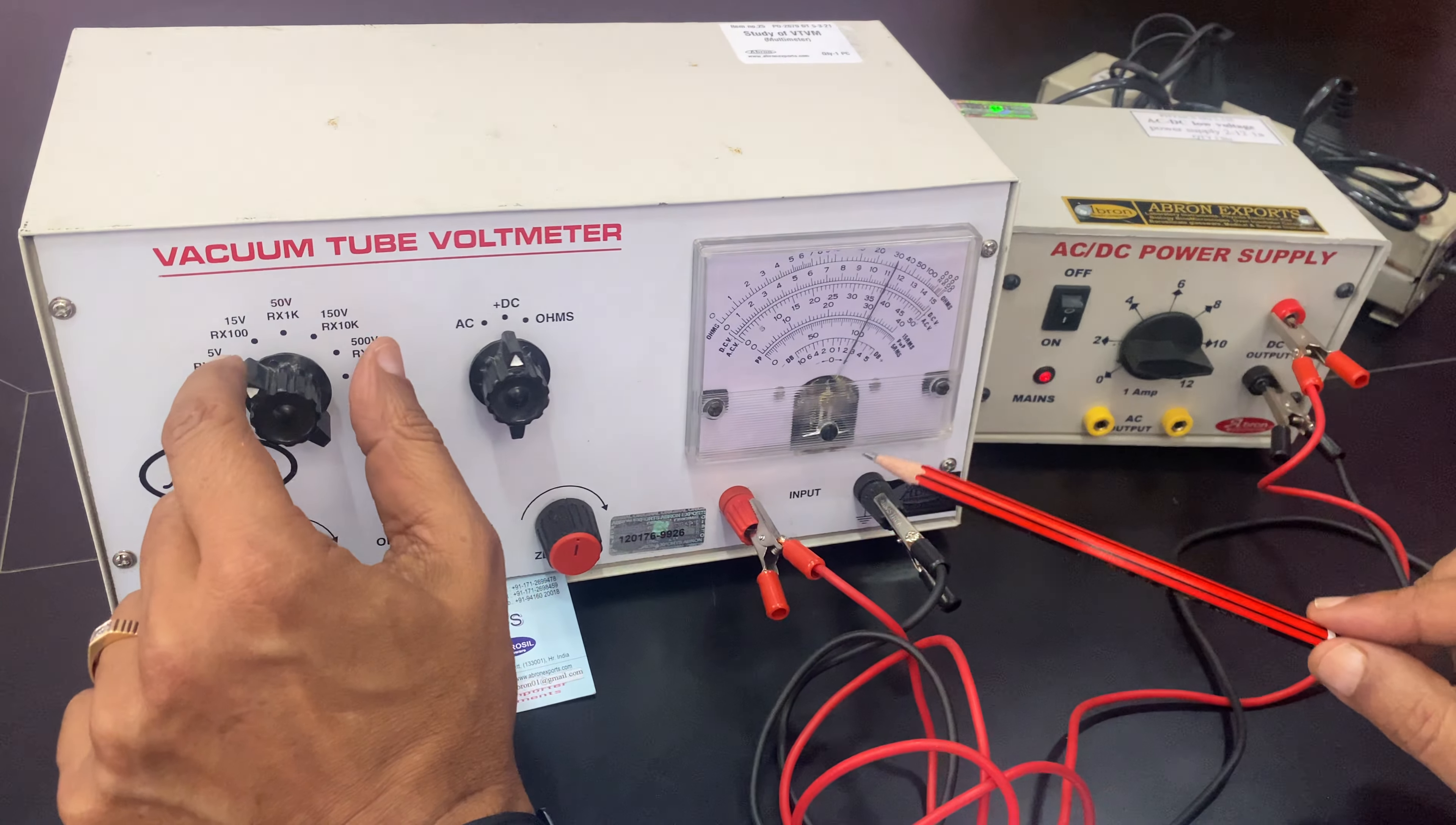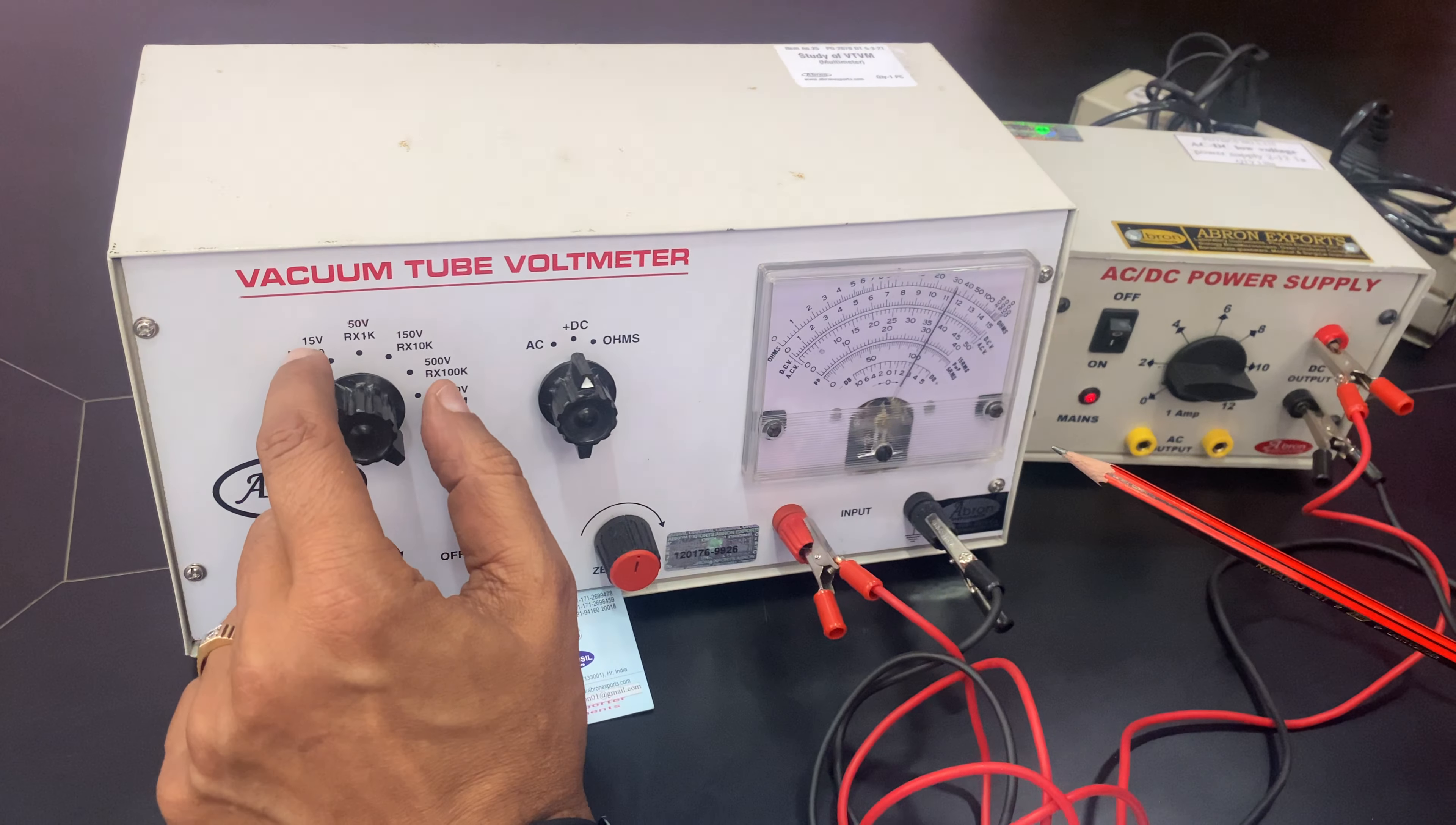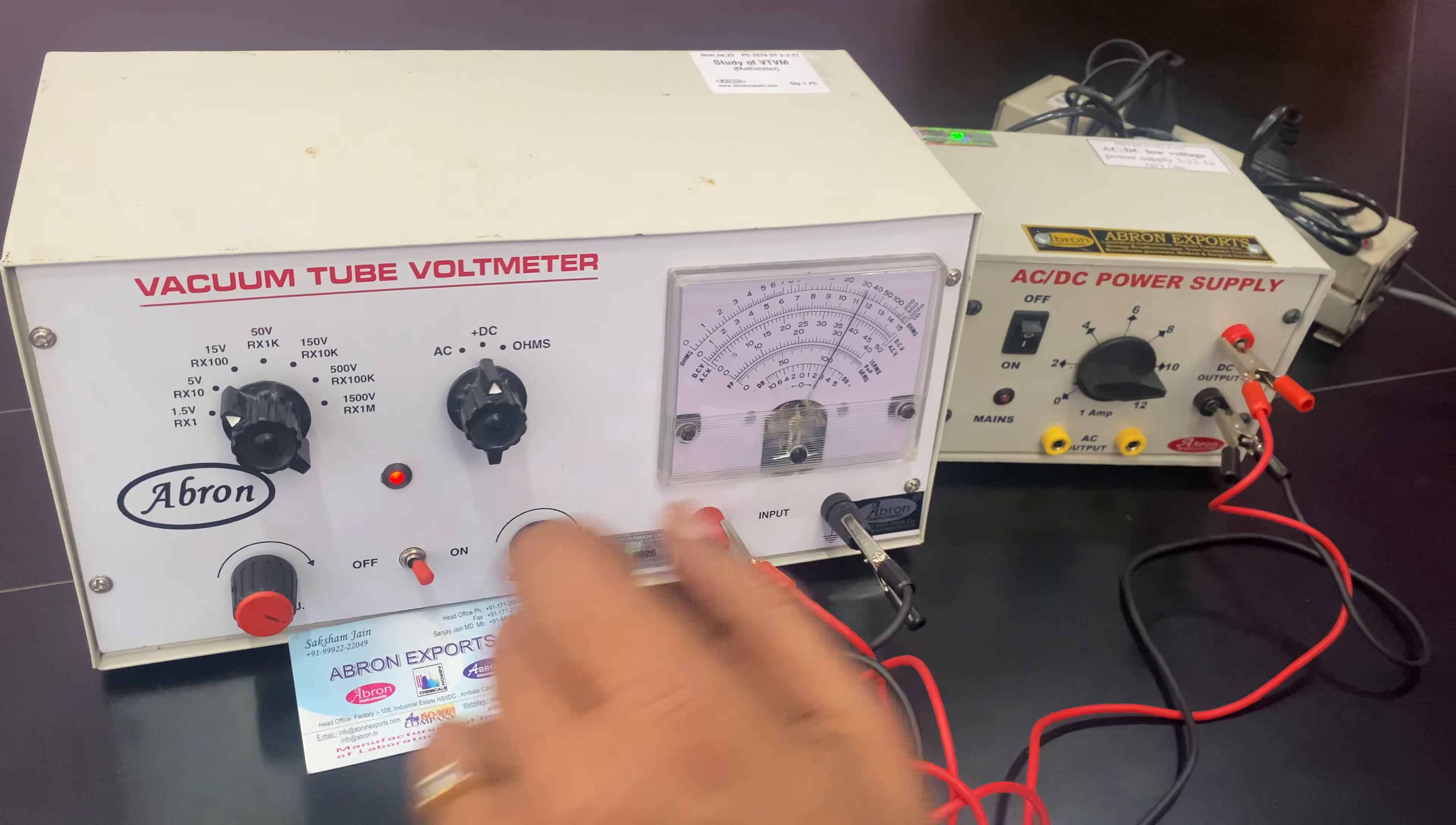This is approximately 30 on the 10x scale, which is about 11 volts. It's showing 11 volts. This range is up to 15 volts. The ranges available are 15 volts, 500 volts, and 1500 volts.